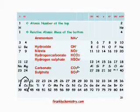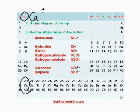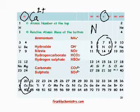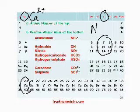Calcium is in group 2 — it's a metal so it's positive, and being in group 2 it's 2+. Nitrogen is in group 5. With 5 electrons in its outer shell, it gains 3 electrons rather than losing 5. Gaining 3 electrons gives it 3 more electrons than protons, so it has a net charge of 3-. That is the nitride ion.